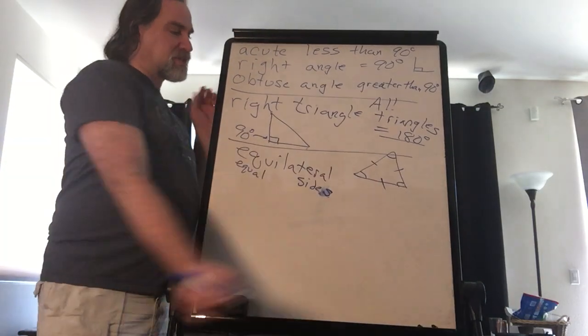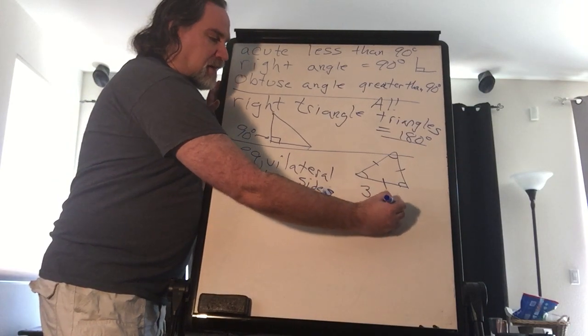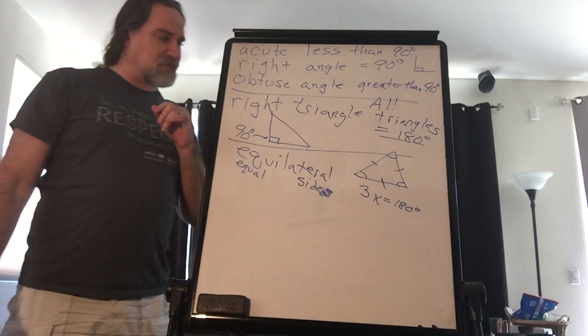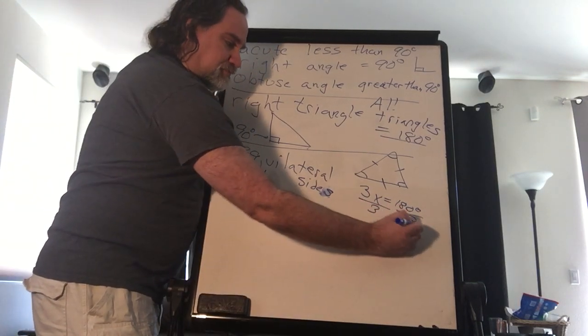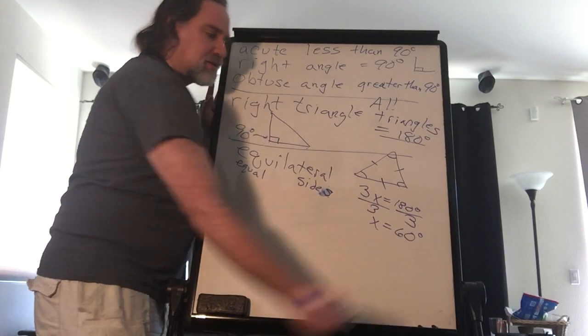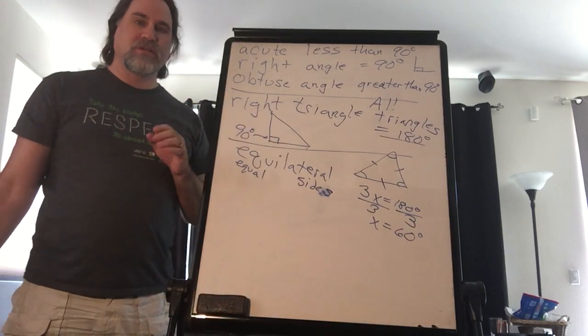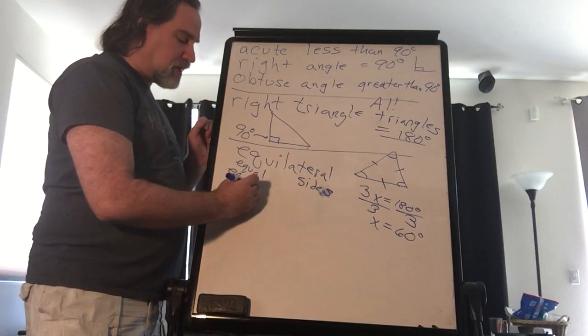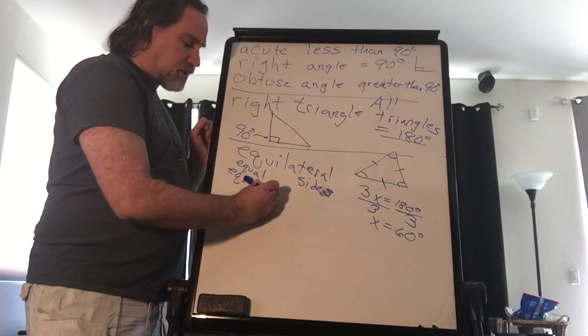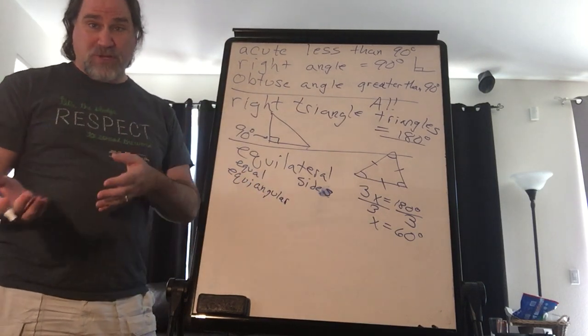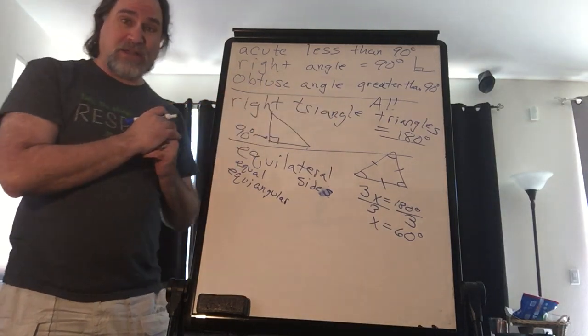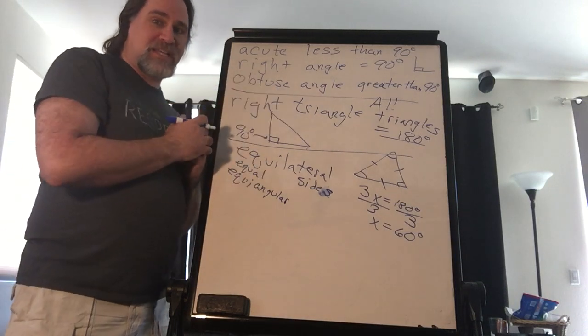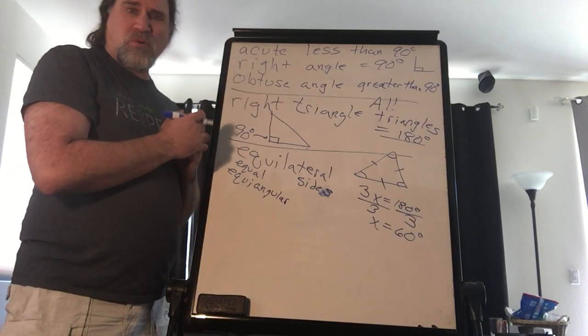It also means that every angle has to be the same. And if every angle has to be the same, there are three angles and they all have to add up to be 180 degrees. That means that every angle in this triangle has to be exactly 60 degrees. So it's equilateral and also called equiangular, meaning all the angles are equal. We have equal sides and equal angles.